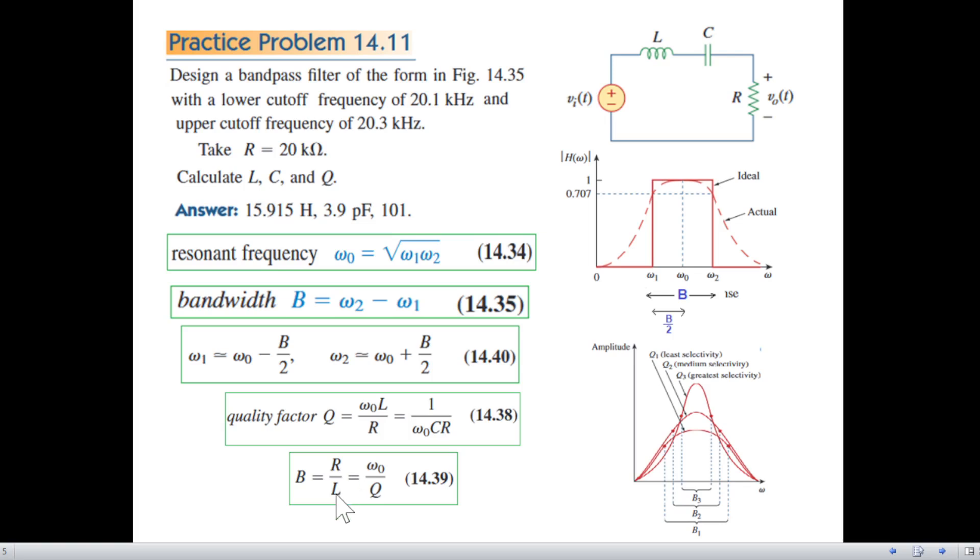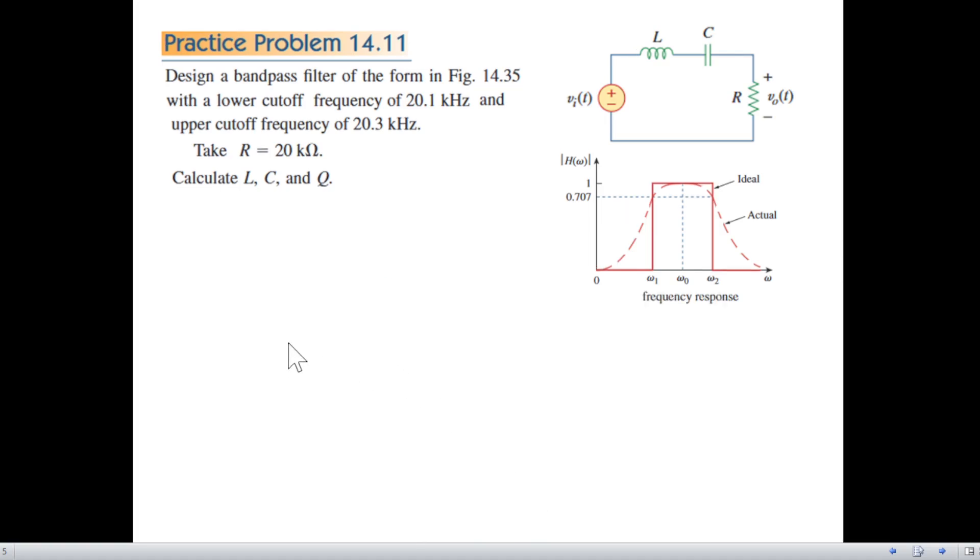Which is also R over L. Now if you see from here, when Q is high then B is low, so they are inversely proportional. Okay, so we'll be using these now to solve this question, these formulas.